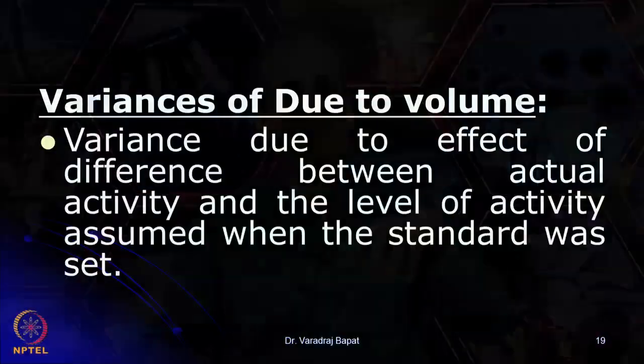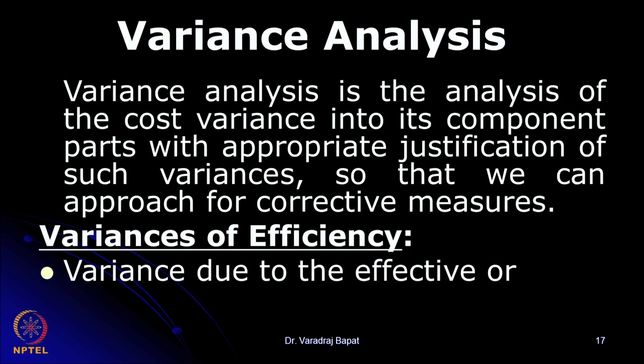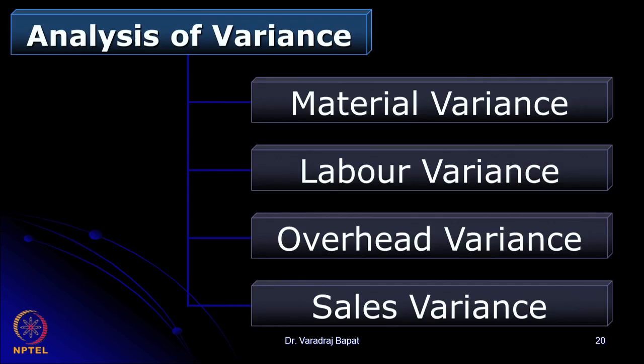Coming to the causes of variances, we know that it can be broken down into 3 main causes: efficiency related, price related, and volume related. Volume related is mostly applicable to fixed overheads. For variable costs like material and labor, there are 2 major causes: efficiency related and price related.